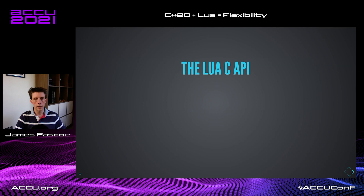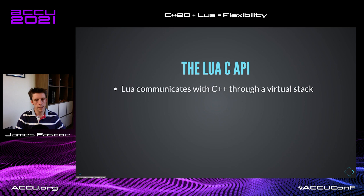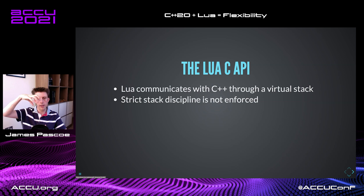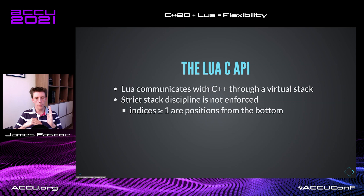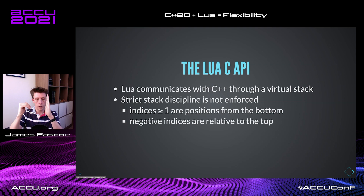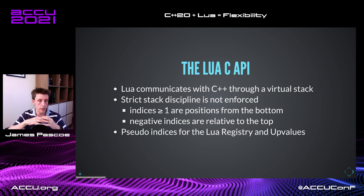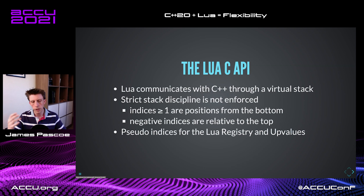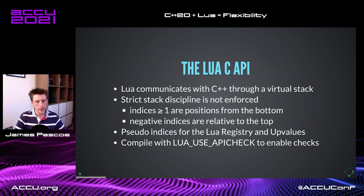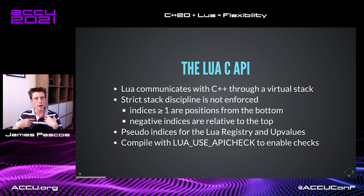The Lua C API. Lua communicates with C++ through a virtual stack, and strict stack discipline is not enforced — you can access the stack from the side, not just through the top. Positive indices are positions from the bottom (1, 2, 3 ... n), while negative indices are relative to the top (-1, -2, -3 ... -n). There are pseudo-indices for the Lua registry — a global place to stash things — and upvalues, which are like static variables for functions. A useful compilation flag enables checks: without it, subtle stack manipulation errors won't surface.